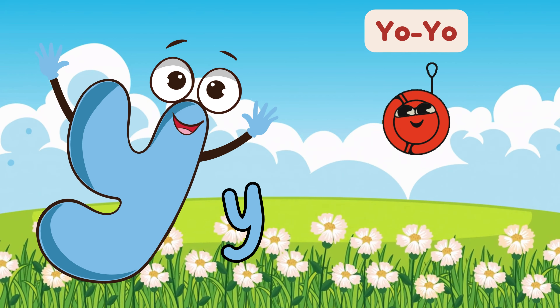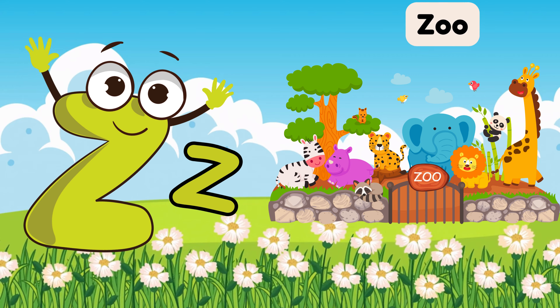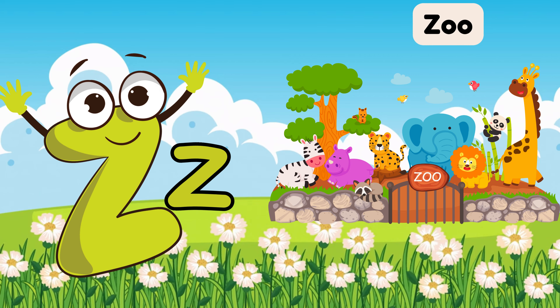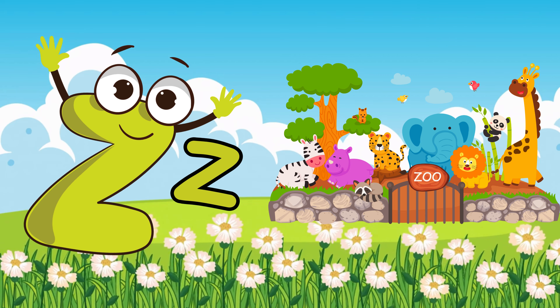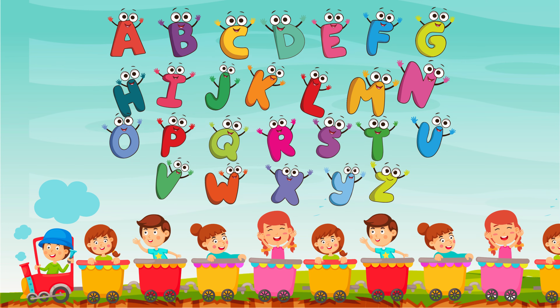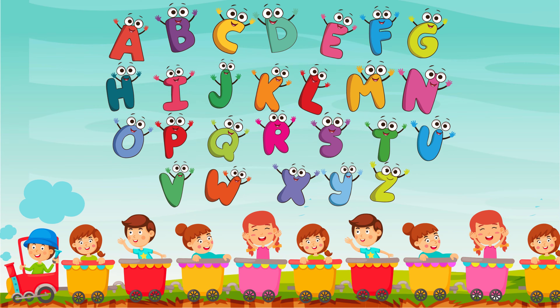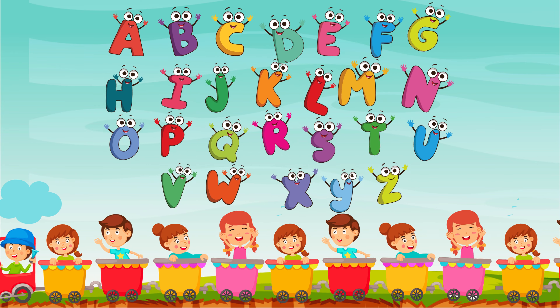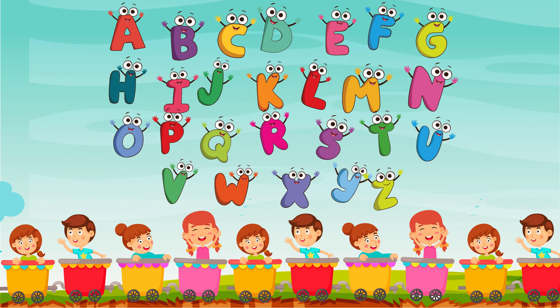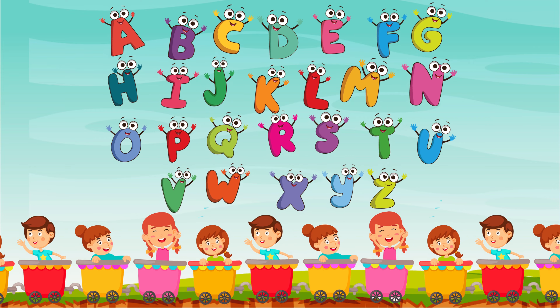Y is for yoyo, Z is for zoo. Now we've sung from A through Z — you and I, me and you, together now.